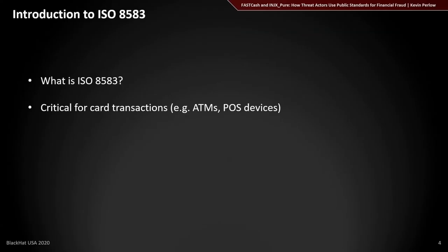ISO 8583 is a standard for financial card transactions. Any time you go to an ATM or a point-of-sale device at a grocery store for self-checkout, those interactions create an ISO 8583 message and transaction. It's a standardized set of fields for transmitting card data over to a payment switch, from that switch to a bank, and back to approve or reject the transaction. This is the basis of the Fast Cash malware.